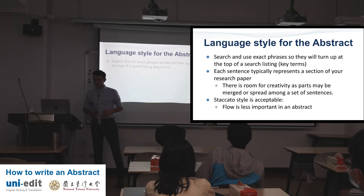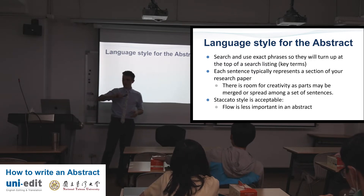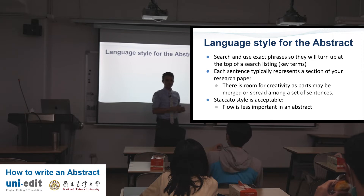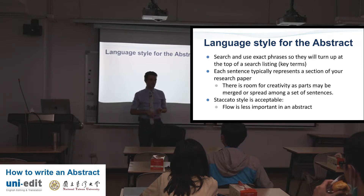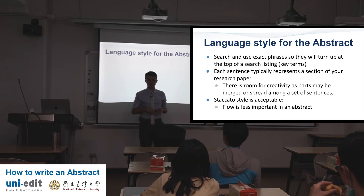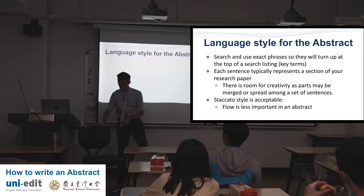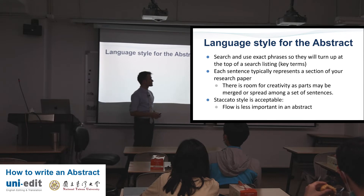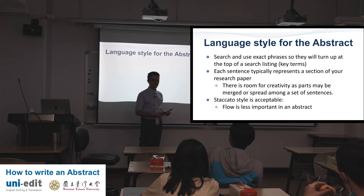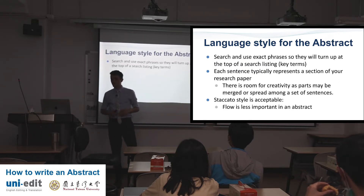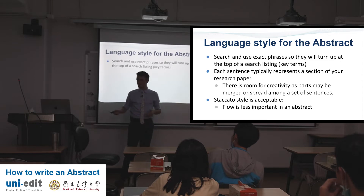Language style for the abstract: your paper is academic English, but your abstract is a little different because you don't really use citations, you don't use industry jargon — really specific terms — you use more easily understood terms. Your abstract sells your work, so it's a little more persuasive than your article. Search and use exact phrases so they will turn up at the top of a search listing — that's your key terms, this is like Google-able.